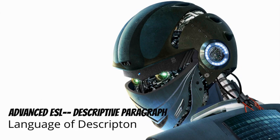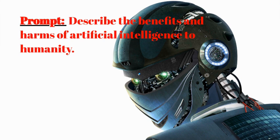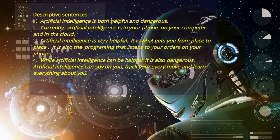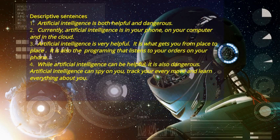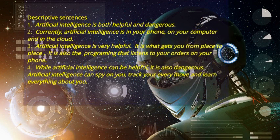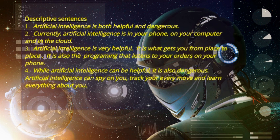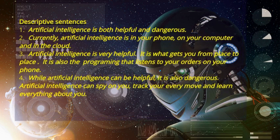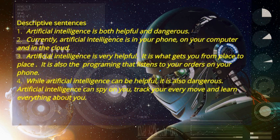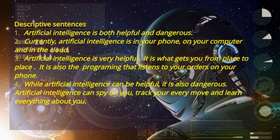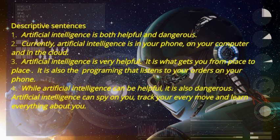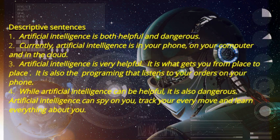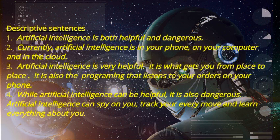Advanced descriptive paragraph using Language of Description. Prompt: Describe the benefits and harms of artificial intelligence to humanity. Descriptive sentences: 1. Artificial intelligence is both helpful and dangerous. 2. Currently, artificial intelligence is in your phone, on your computer, and in the cloud. 3. Artificial intelligence is very helpful — it is what gets you from place to place, and it is also the programming that listens to your orders on your phone. 4. While artificial intelligence can be helpful, it is also dangerous. Artificial intelligence can spy on you, track your every move, and learn everything about you.